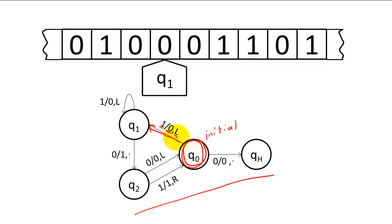Now we are in state q1, and our current cell has value 0. Our state diagram tells us to transition to state q2, change the current cell to 1, and keep the head in the same place.